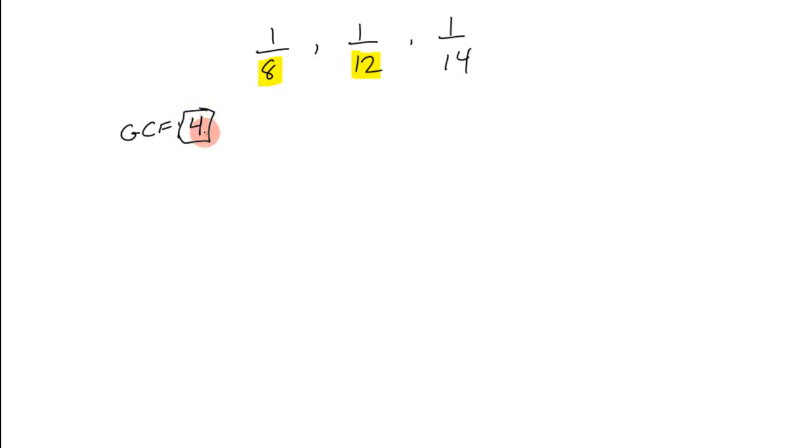Now what we do is we take that 4 and we divide it into one of those two. So I'll take 8 and divide it by 4. I choose 8, I could take 12. I get 2. Since I took the 8 and divided it by 4, I take the 2 and I multiply it by the 12. 2 times 12 is 24.